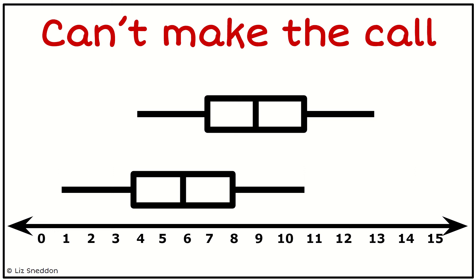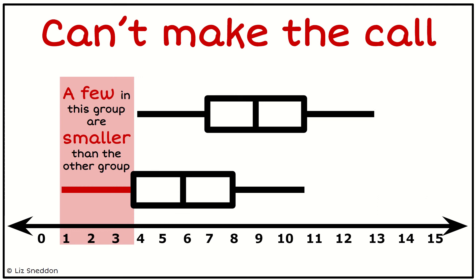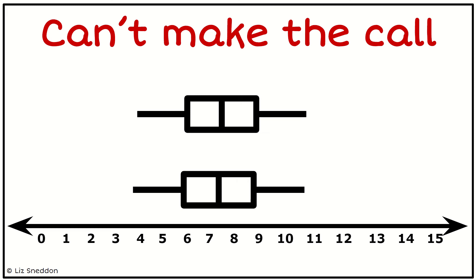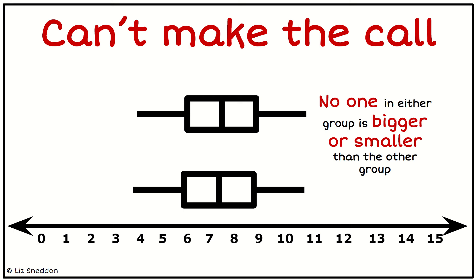What if they're a bit closer again? In this case there's a tail down the bottom so a few people in this group are smaller than everybody else. There are a few in the top group that are bigger, but there's lots of values that are the same — a lot of overlap between a lot of the data — so in this situation we couldn't make the call. If the groups are exactly the same, that tells me no one in either group is bigger or smaller, so I definitely can't claim that one group tends to be bigger than another.